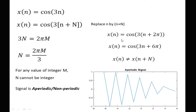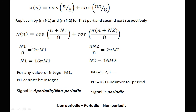We check: x(n) = cos(3n + 2π) still equates, but the signal is not periodic because whatever value of N we obtain is not a positive integer.